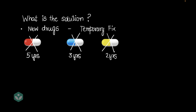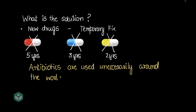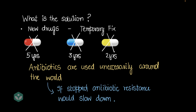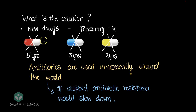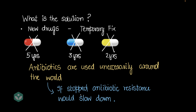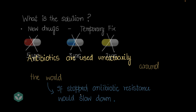The real problem was that antibiotics were being used unnecessarily around the world. If we could just stop using antibiotics unnecessarily, antibiotic resistance would slow down. For example, if it currently takes five years for the bug to learn to beat the antibiotic, reducing unnecessary use may extend that to 15 years. So in what ways are we using antibiotics unnecessarily? Let's go through that.